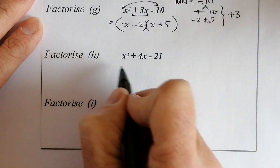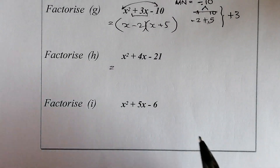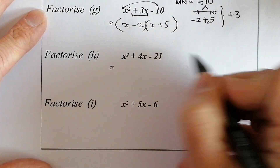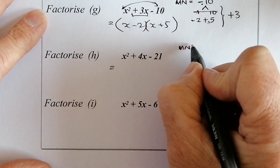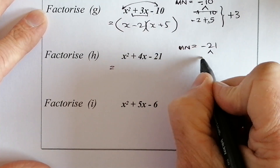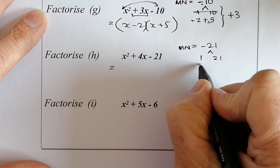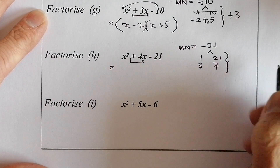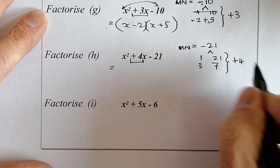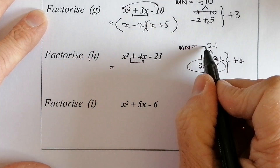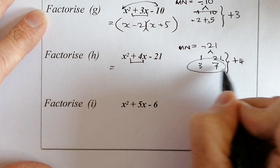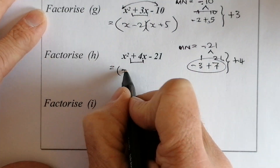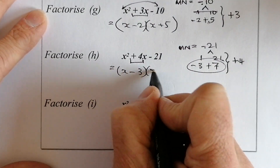Freeze the video and try the next one. Magic number is minus 21. Factors of 21: 1 and 21, 3 and 7. I want to make positive 4 — one minus, one plus. The bigger number is positive, so: (x − 3)(x + 7).